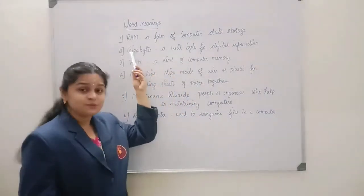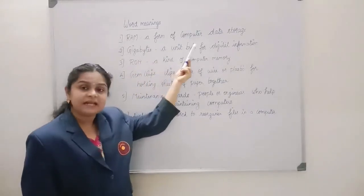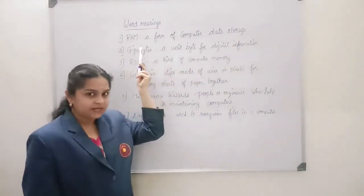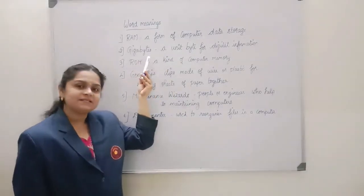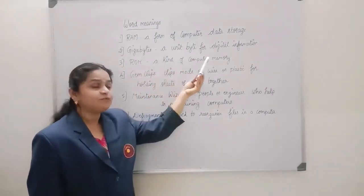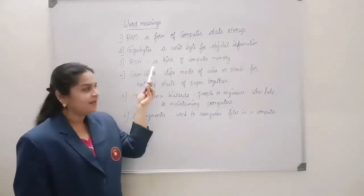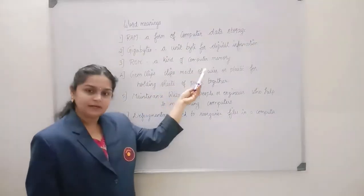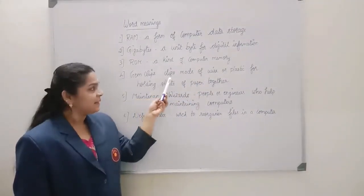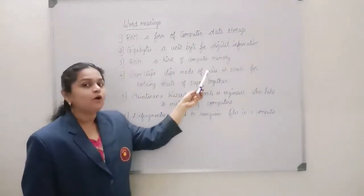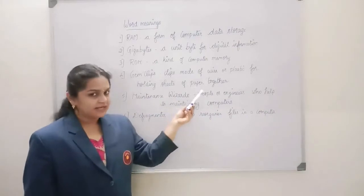The first one is RAM — a form of computer data storage, which you all might have learned: Random Access Memory. Gigabytes — a unit byte for digital information. ROM — Read Only Memory, a kind of computer memory. Gem clips — clips made of wire or plastic for holding sheets of paper together.